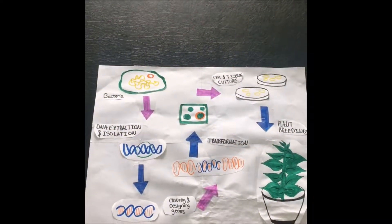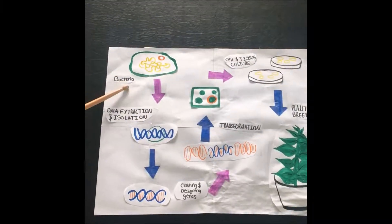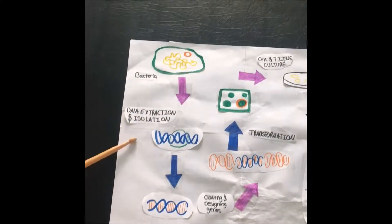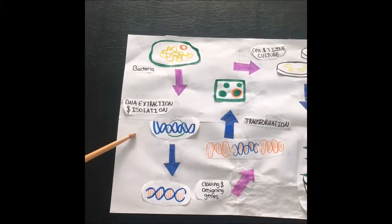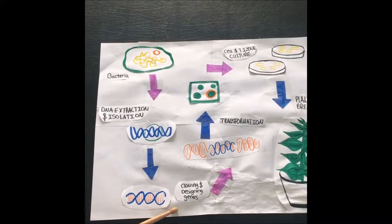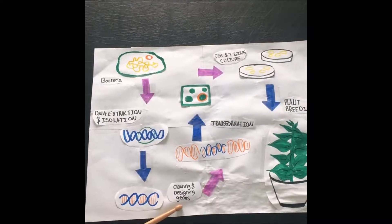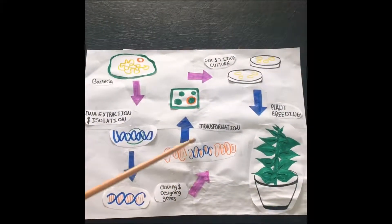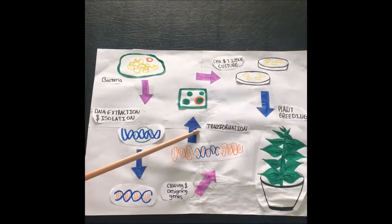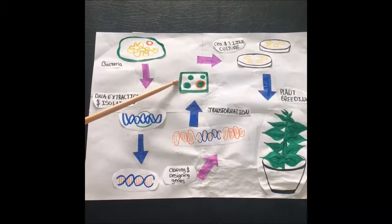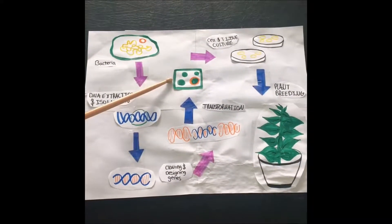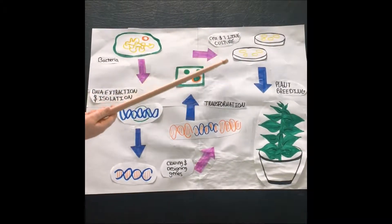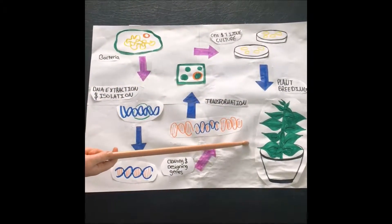Genetic engineering is a process where a desired gene of an organism is extracted and isolated, spliced out of the surrounding genetic sequence, and cloned using laboratory techniques. And through a process called transformation, it is inserted into the organism that is desired to be modified. The crops then display the desired changes of the gene.